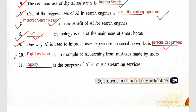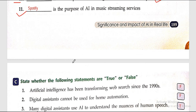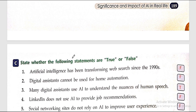Question ten: digital assistant is an example of AI learning from mistakes made by users. Question eleven: Spotify is an example of the purpose of AI in music streaming services. That concludes the fill in the blanks section. Next is true or false.